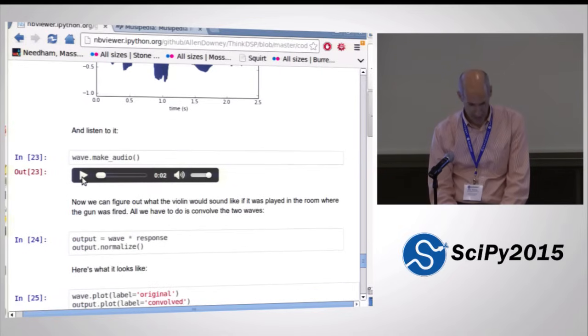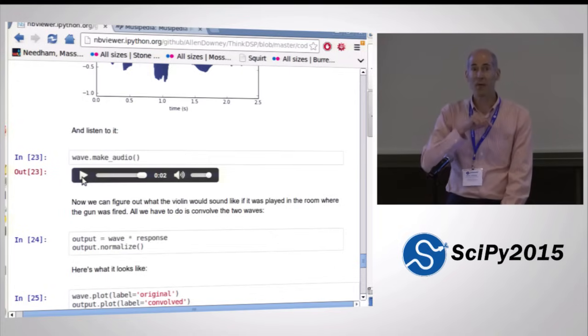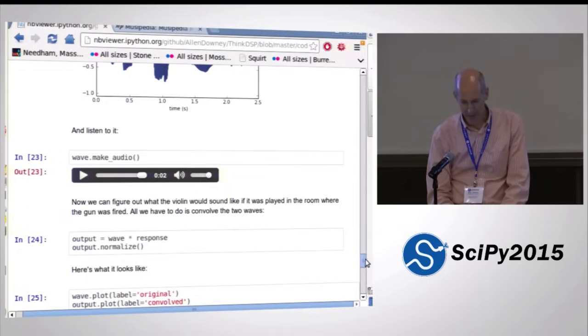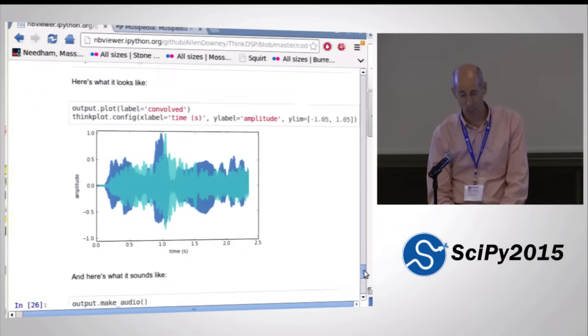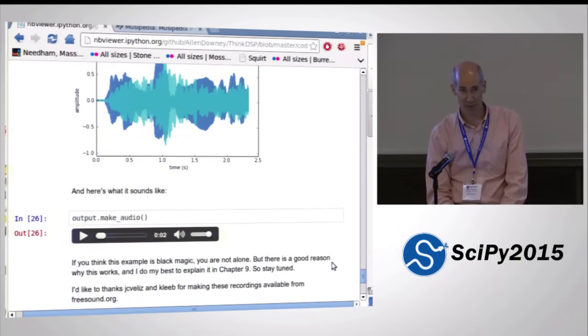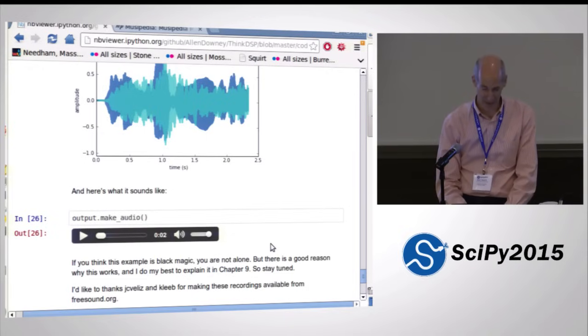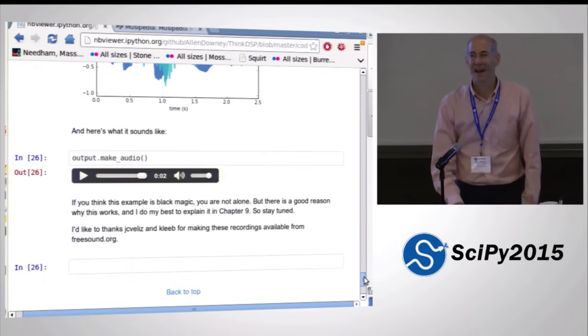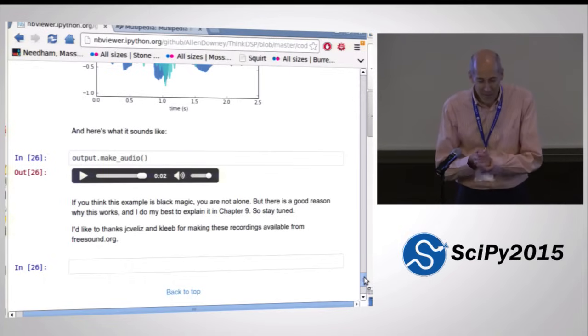And so now you can take that, this is the original. So now if we convolve the violin with the impulse response, what we're going to get is a simulation of what that violin would have sounded like if it was played in the room where the gun was fired. And here's what that sounds like. It kind of sounds like a violin being played in a firing range, which is exactly what it is.